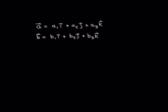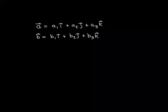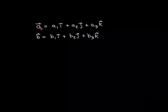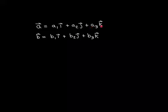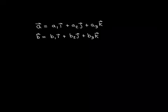We now have all the machinery we need to show our formula. Let's take two vectors A and B that we're going to dot product, and write both of them as linear combinations of the standard basis vectors — the i, j, k basis vectors. Vector A is A1i plus A2j plus A3k, and vector B is B1i plus B2j plus B3k.